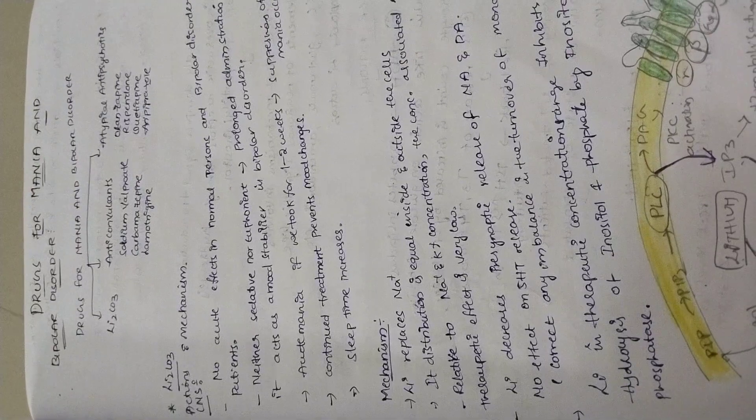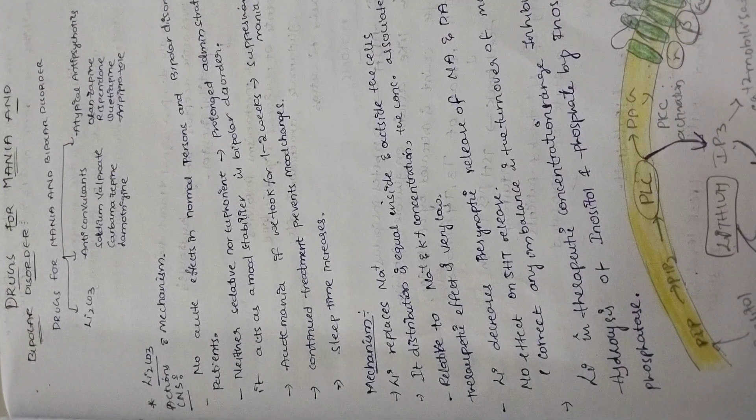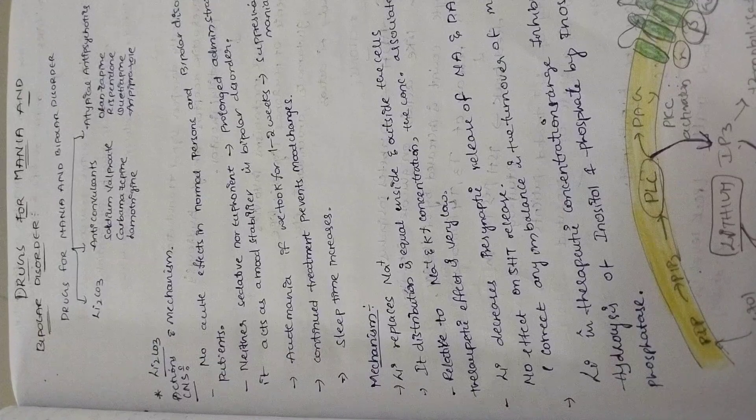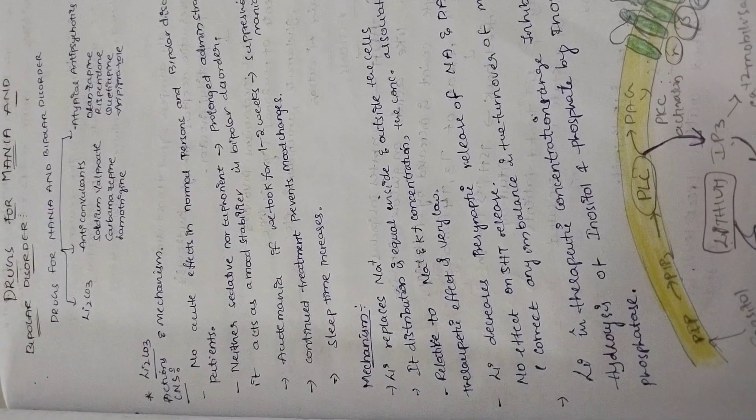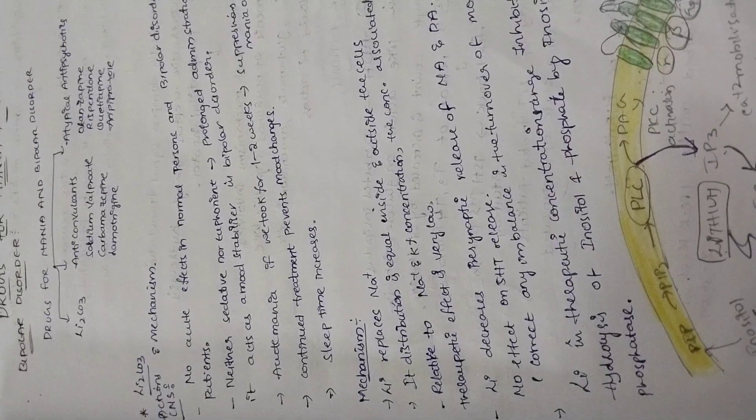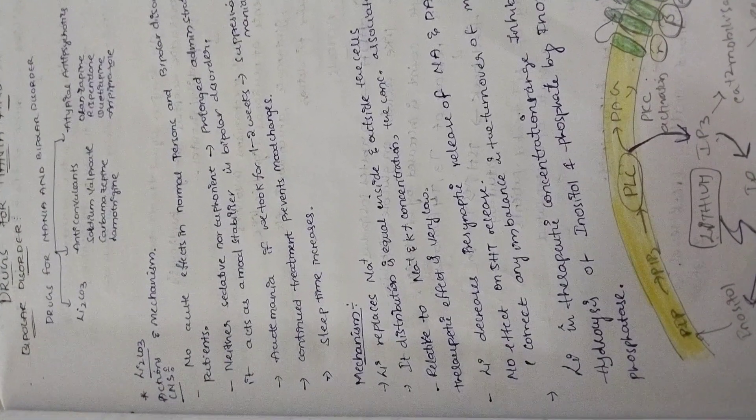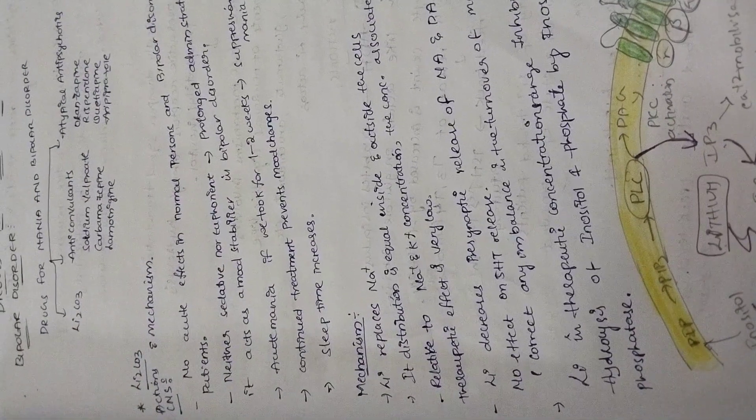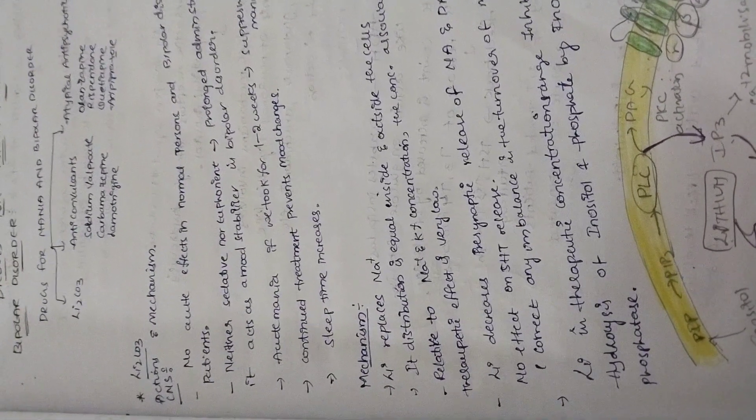Drugs for mania and bipolar disorder are classified as lithium carbonate and anticonvulsants like sodium valproate, carbamazepine, lamotrigine, and atypical antipsychotics like olanzapine, risperidone, quetiapine, and aripiprazole. Let's continue.